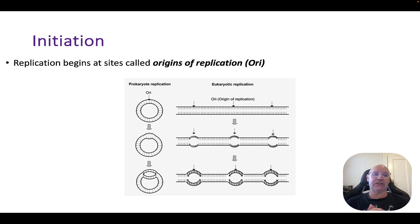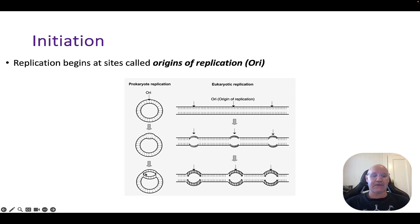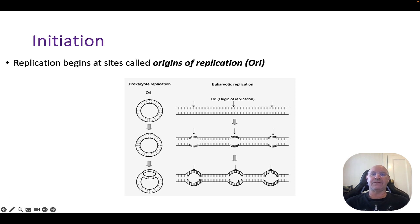Initiation of the replication process occurs at a site called the origin of replication, or ORI. In prokaryotes there's one ORI, and you can see a fork going in each direction with new DNA being produced. With eukaryotes there are multiple origins of replication, with forks going in both directions and new strands of DNA being produced. So initiation starts at the ORI.